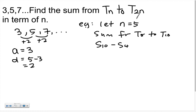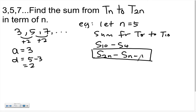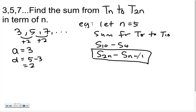Now, 10 is 2n when n = 5, and 4 is n − 1 = 4. So in general, this becomes S₂ₙ minus Sₙ₋₁. Whatever 2n is, I sum until there; and whatever n − 1 is, I subtract that partial sum. This is the key expression you must write out in order to solve this question.